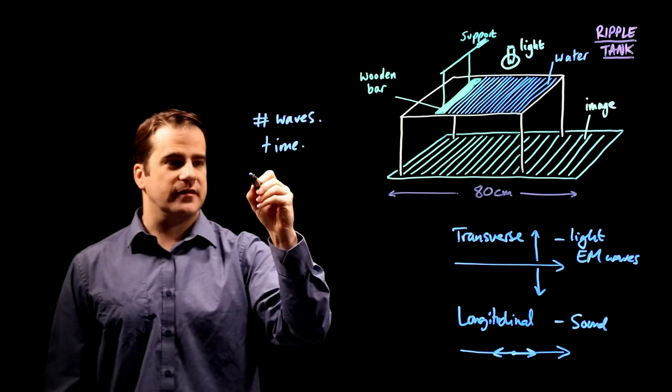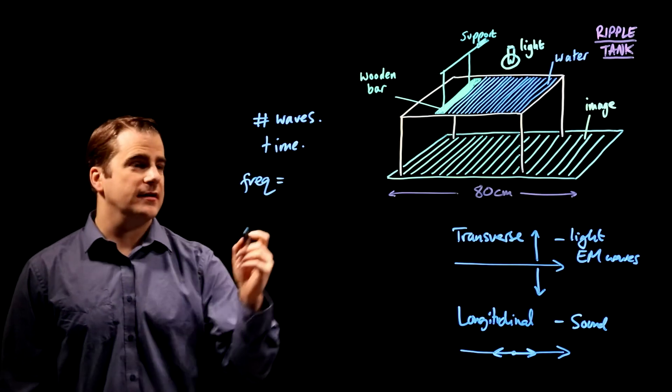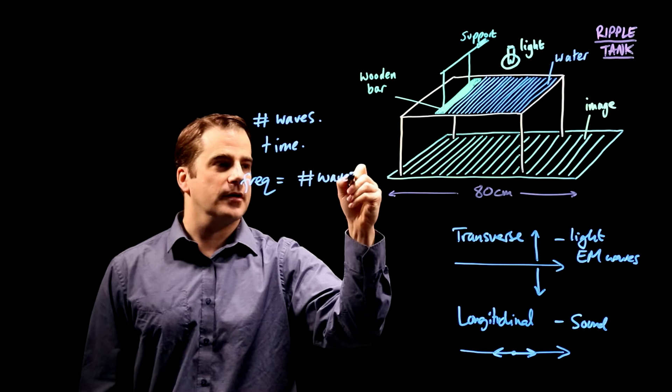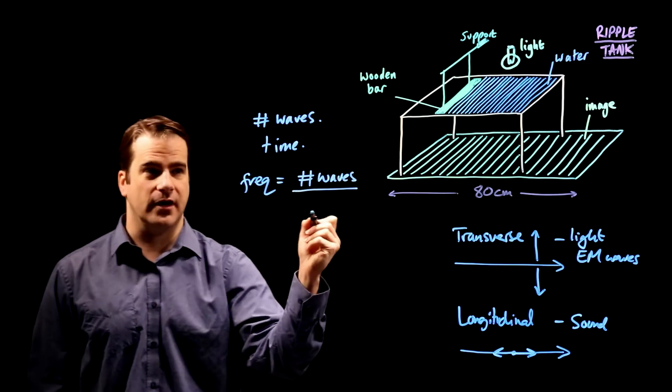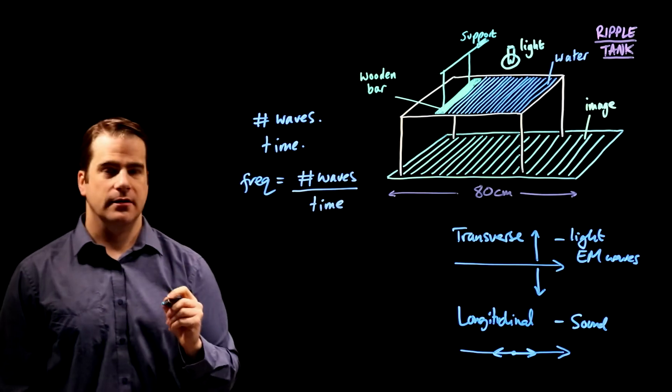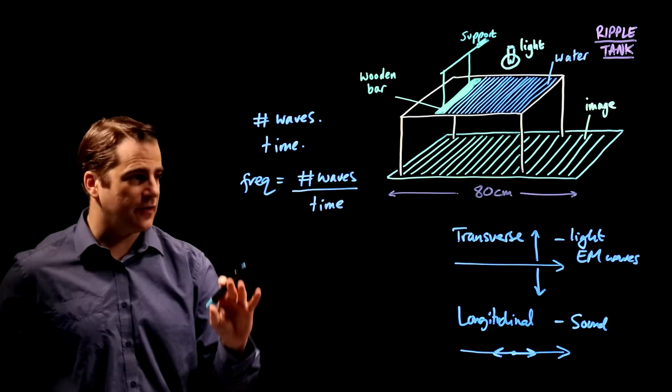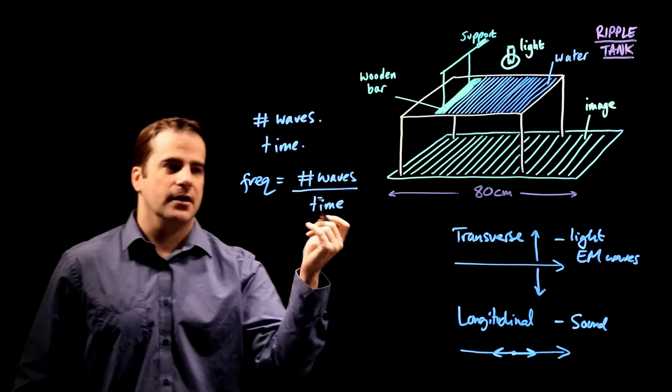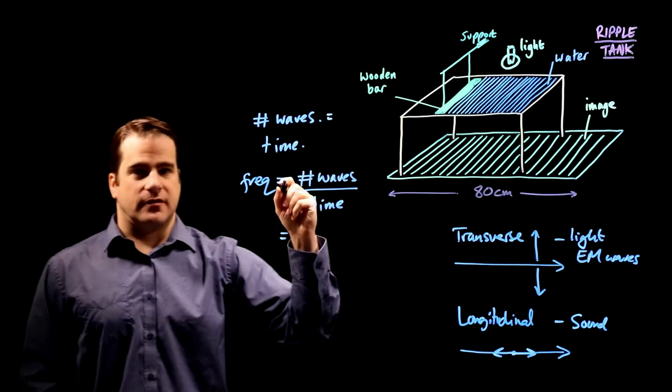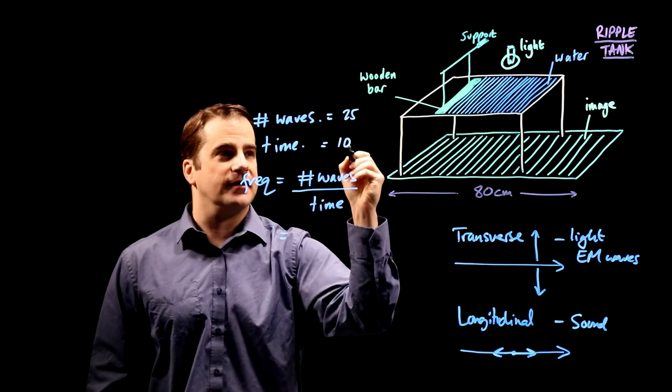And the frequency, as we talked about, is the number of waves that passes that point per unit time. So per means divided by the time. So let's say you counted, this is just example numbers, nothing to do with the rest of the question. Let's say number of waves, you counted 25 waves in 10 seconds.